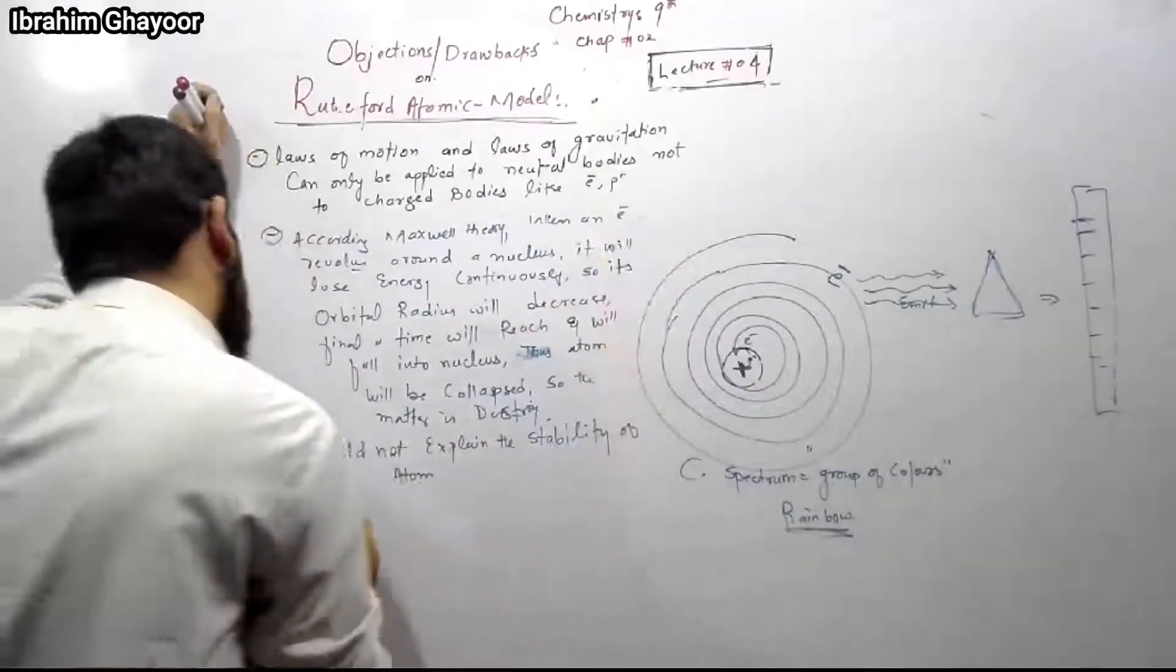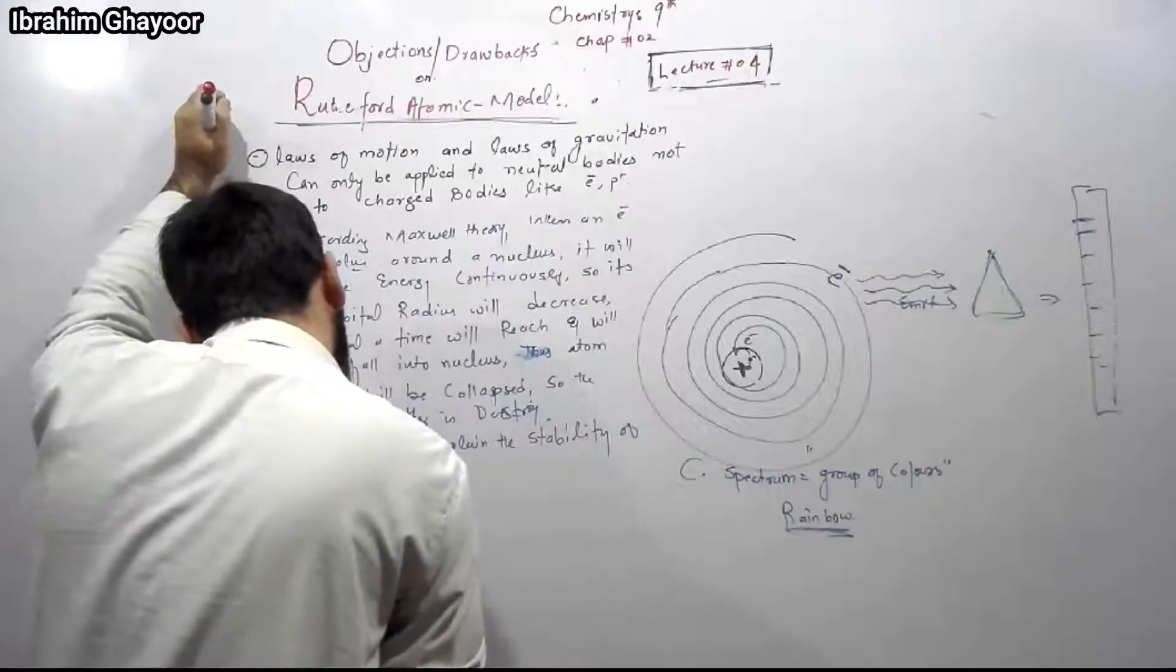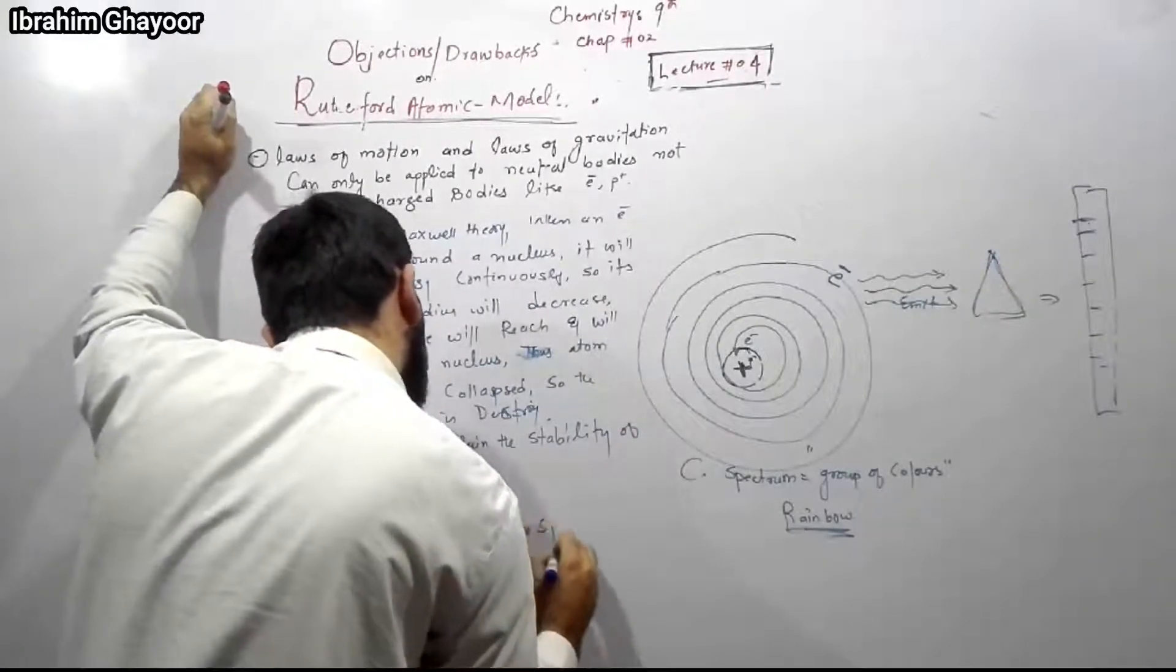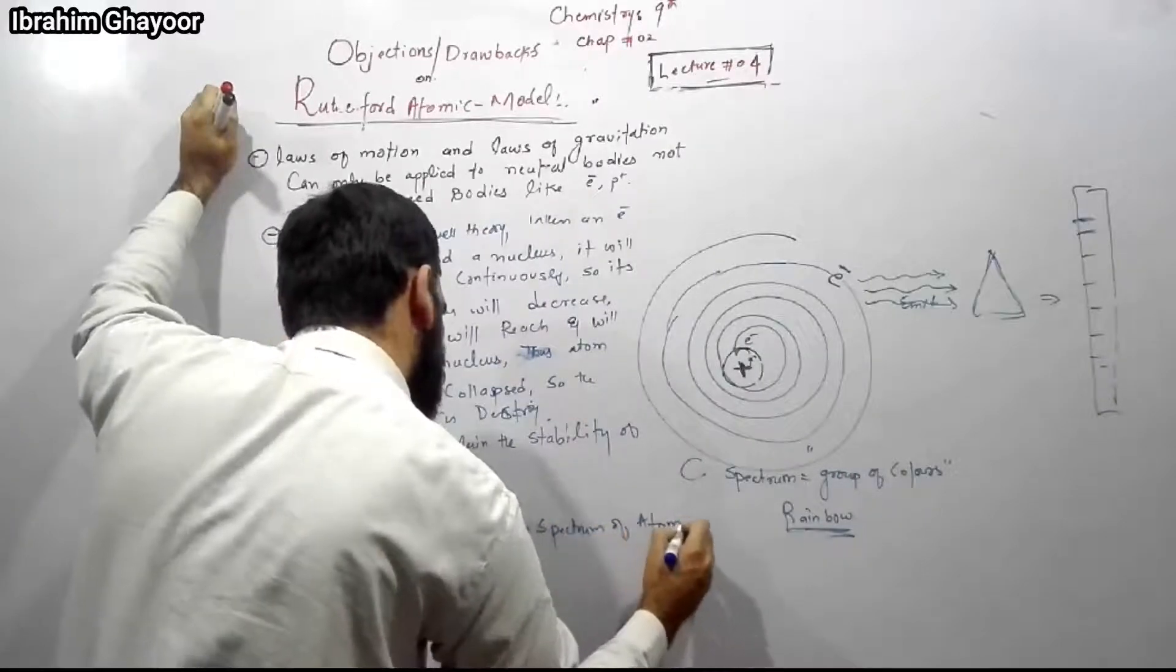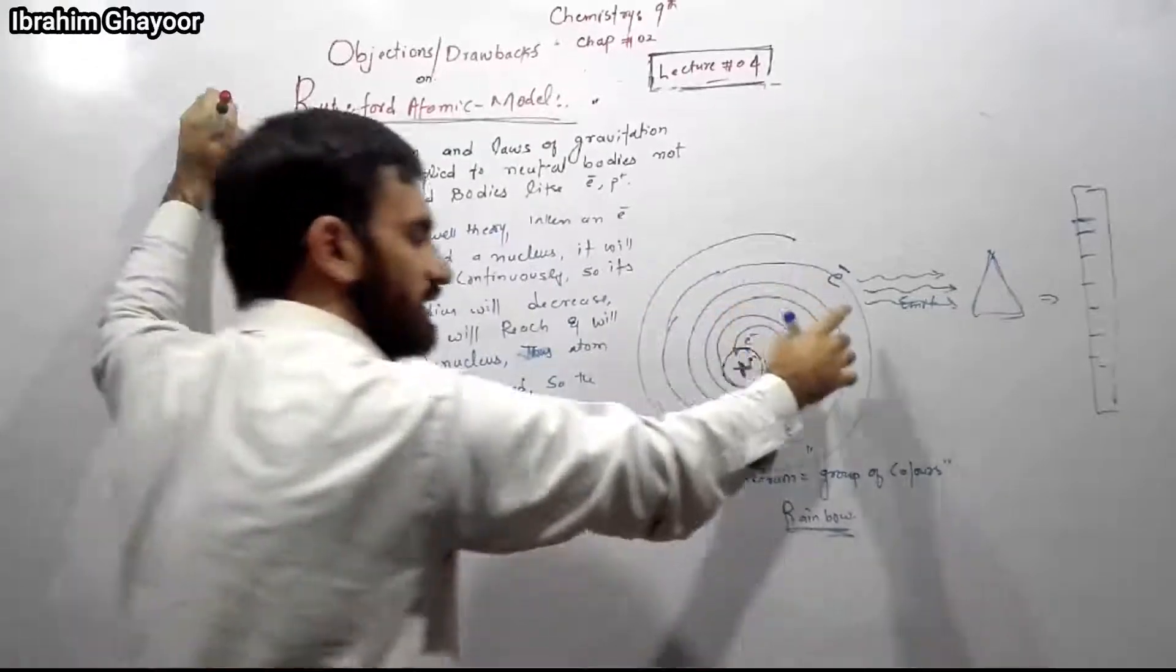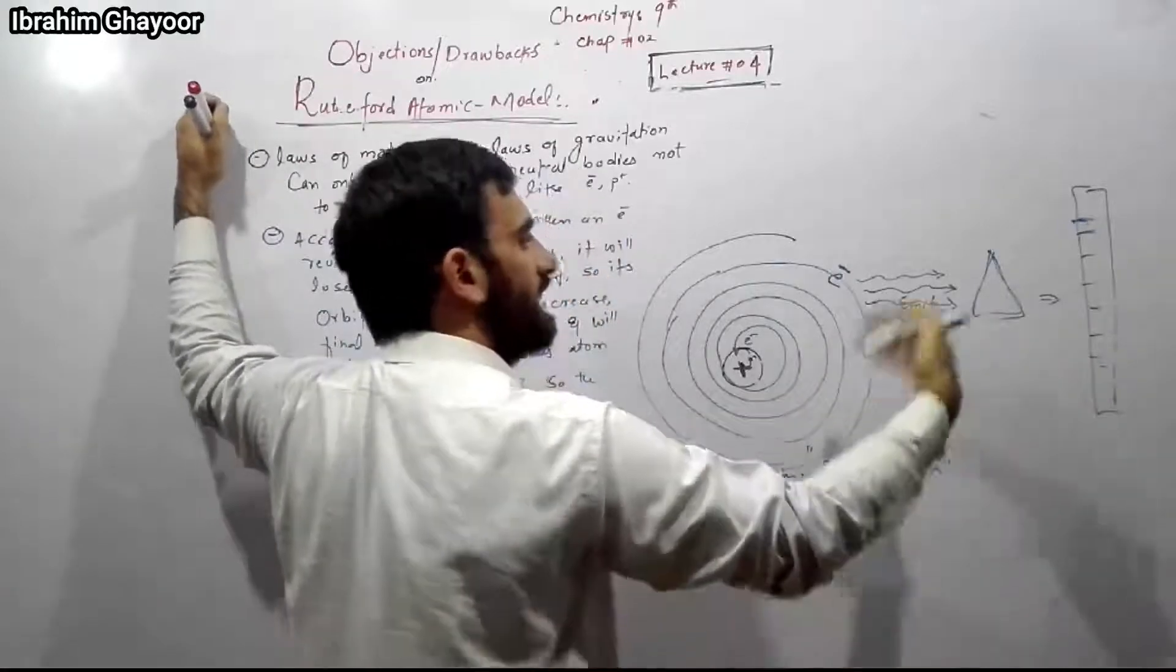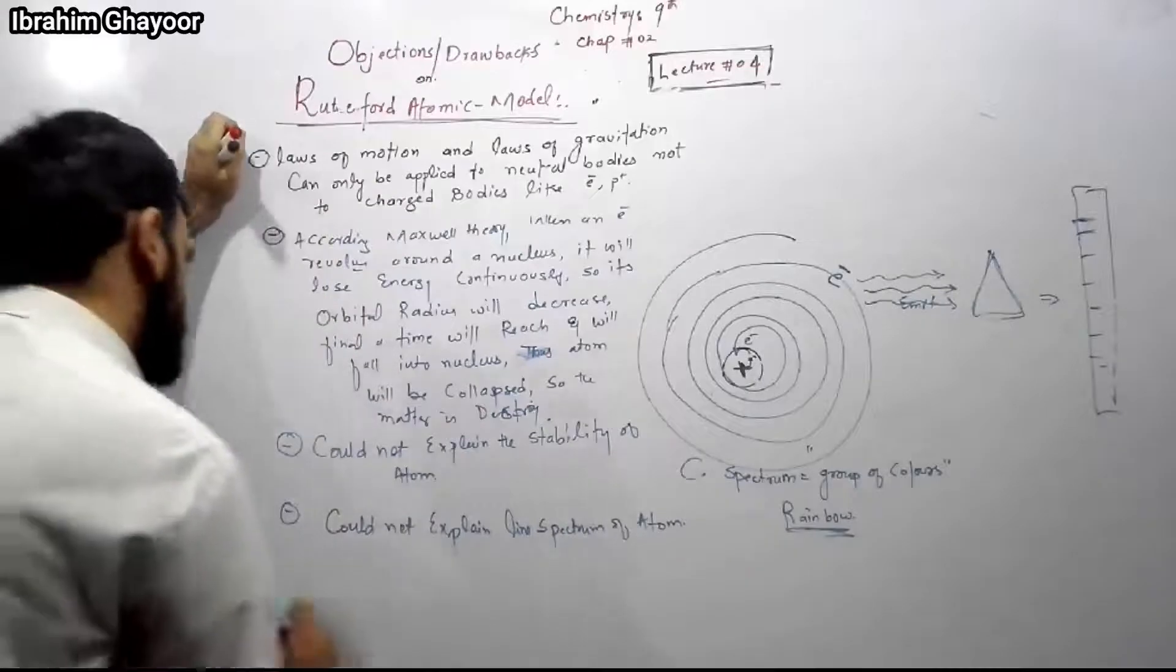But actually, atoms give a line spectrum, not a continuous spectrum. Rutherford could not explain the line spectrum of atoms. As electrons are continuously revolving around the nucleus, the atom should give a continuous spectrum, but actually a line spectrum is obtained. Rutherford's model cannot explain this.